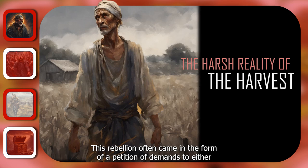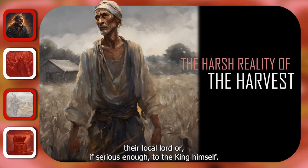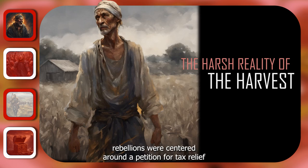This rebellion often came in the form of a petition of demands to either their local lord or, if serious enough, to the king himself. In Henry's reign, both the Yorkshire and Cornish rebellions were centred around a petition for tax relief.